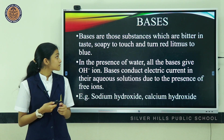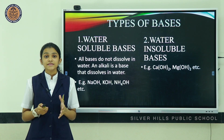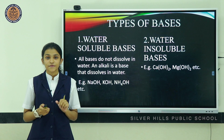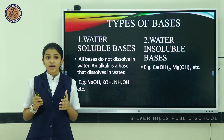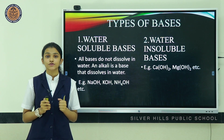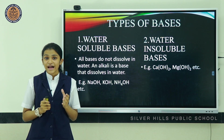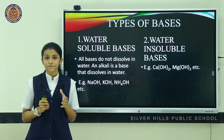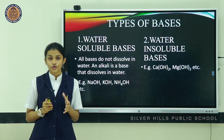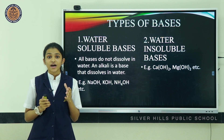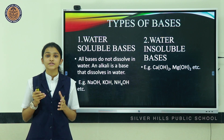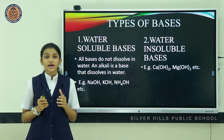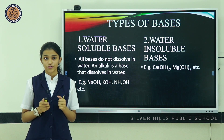Some examples of bases are sodium hydroxide, calcium hydroxide, potassium hydroxide, and ammonium hydroxide. Bases can be divided into two types: water-soluble bases and water-insoluble bases. Not all bases dissolve in water. An alkali is a base that dissolves in water — examples include sodium hydroxide, potassium hydroxide, and ammonium hydroxide.